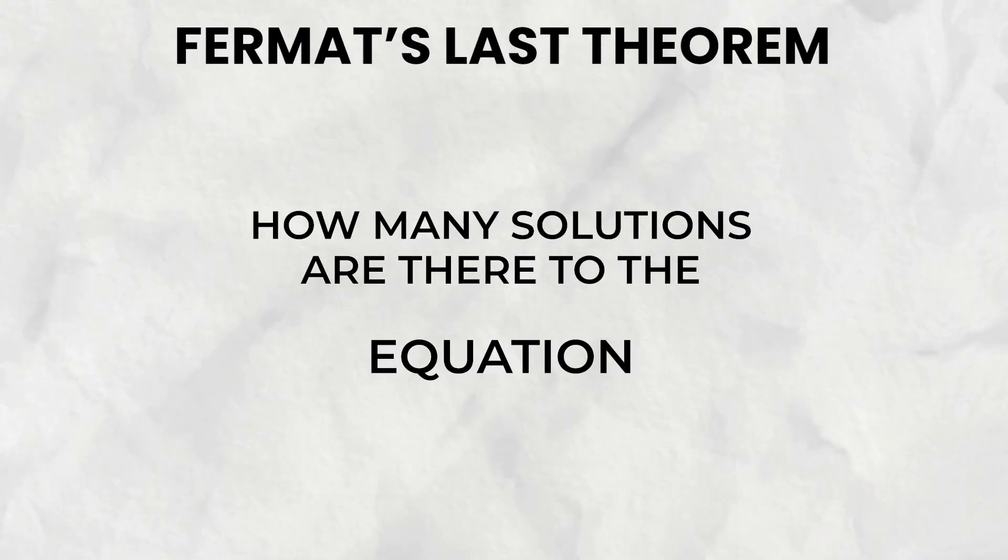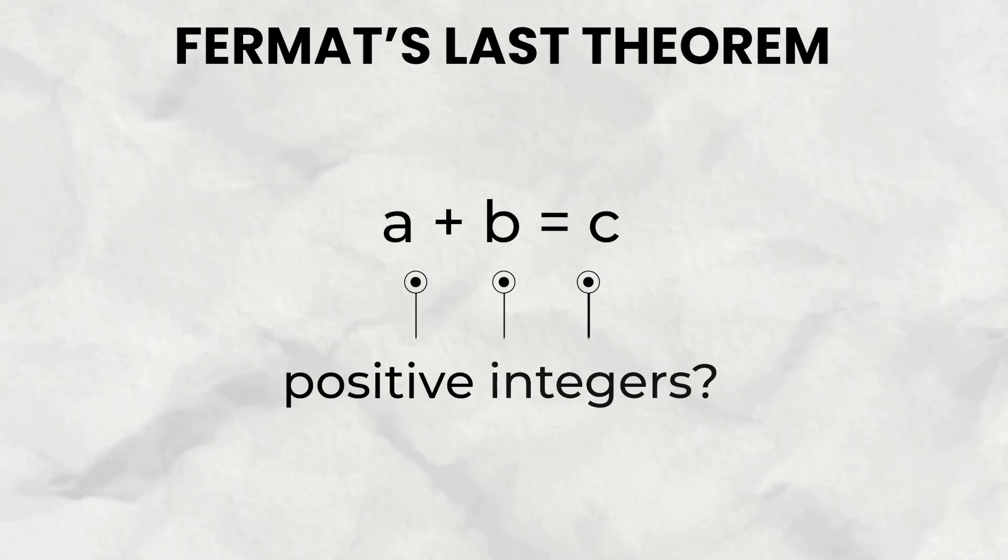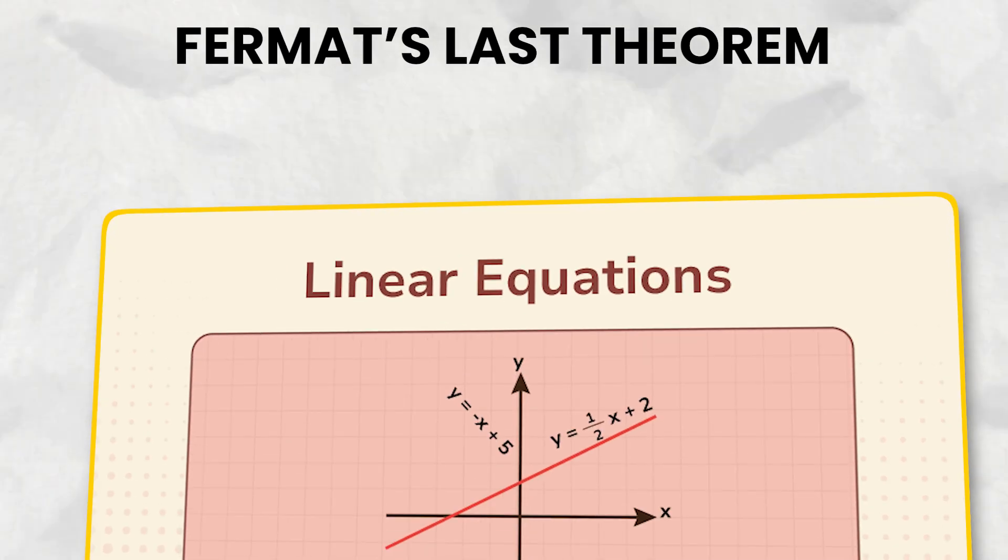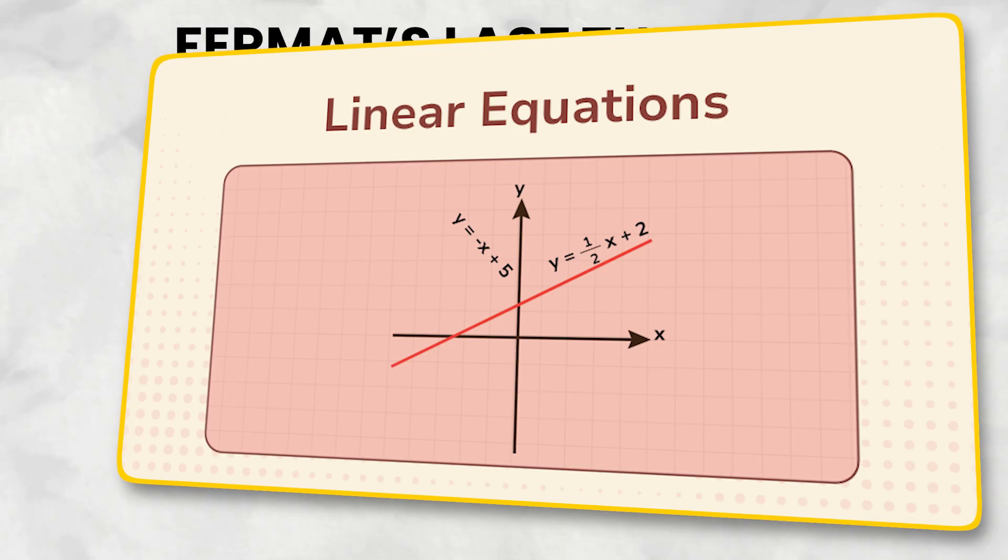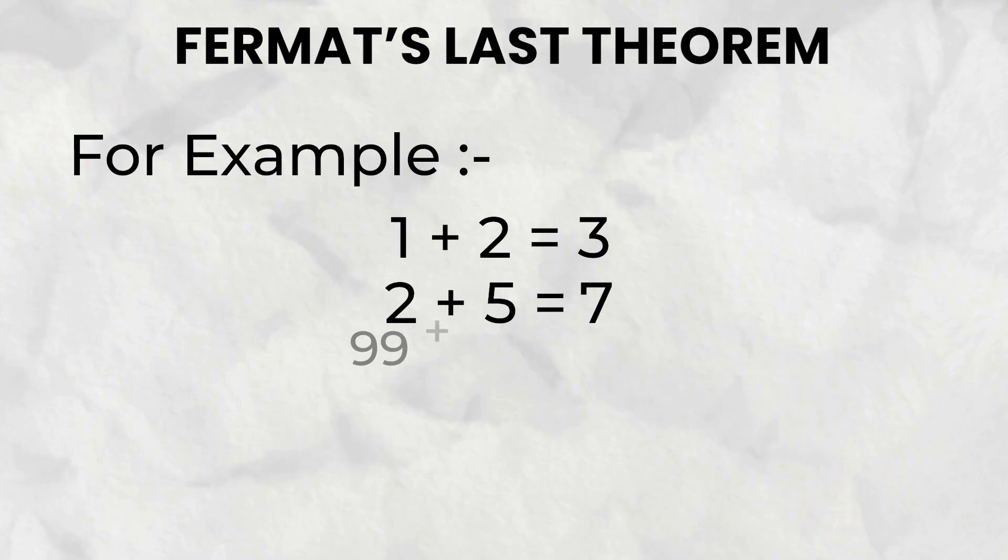How many solutions are there to the equation a plus b equals c, where a, b, and c are all positive integers? Since it is a linear equation, it has an infinite amount of solutions. For example, you can have 1 plus 2 equals 3, 2 plus 5 equals 7, or 99 plus 57 equals 156.